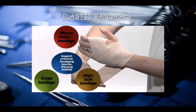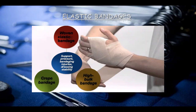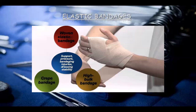The elastic bandage — you may have experienced the crepe bandage. It has elasticity and can be applied tightly to cover an area. These are woven elastic bandages used for support, pressure bandaging, injuries, dressing, and stability — mostly at movement joints where there is pain. The crepe bandage is a high bulk bandage, mostly applied where there is a dislocation or cut that needs to be fixed tightly.